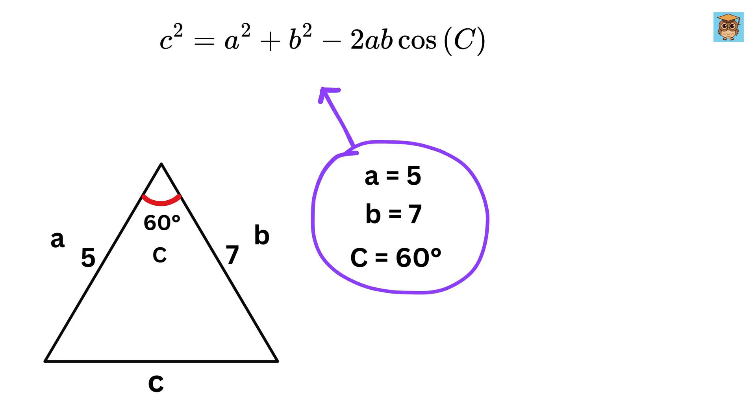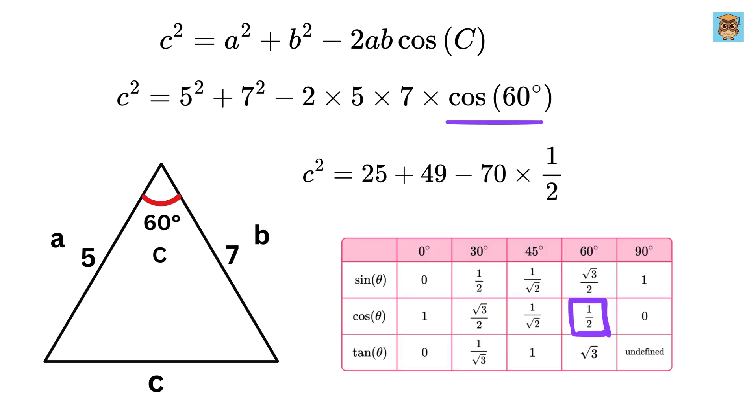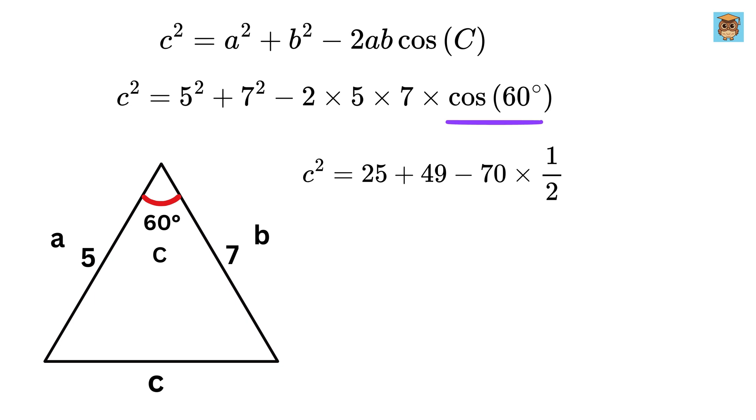Now simply substitute these values in this formula. We get C squared equals 5 squared plus 7 squared minus 2 times 5 times 7 times cosine of 60 degrees. Thus, C squared equals 25 plus 49 minus 70 times cosine 60 degrees, which is half.